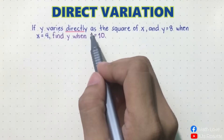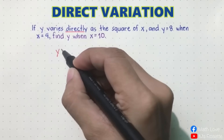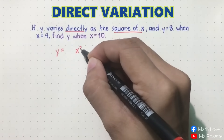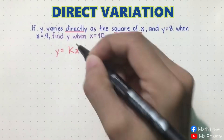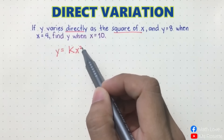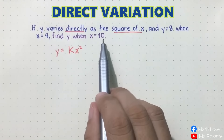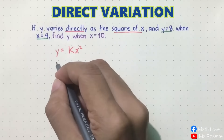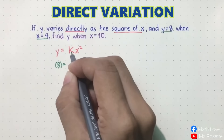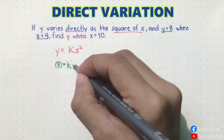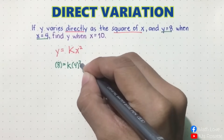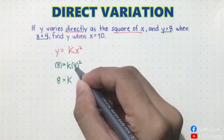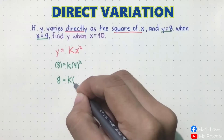If y varies directly as the square of x, the equation will be y is equal to kx squared, where k is the constant of variation. To solve for y when x is equal to 10, we have to solve for the constant first using y is 8 and x is 4. Substituting: 8 equals k times 4 squared, and 4 squared will become 16.